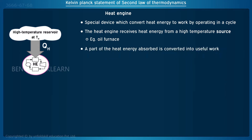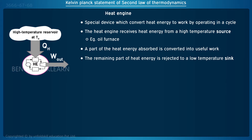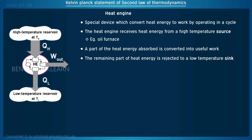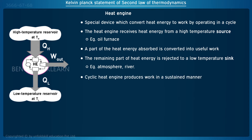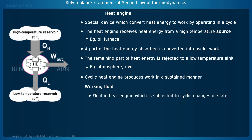A part of this heat energy is converted into work. The remaining part of the heat energy is rejected to a sink which is at a lower temperature than the heat engine, such as the atmosphere or a river. A heat engine operating in a cycle produces work in a sustained manner. The heat engine consists of a fluid called the working fluid, which is subjected to cyclic changes of state. The working fluid absorbs and rejects heat with the thermal reservoirs.